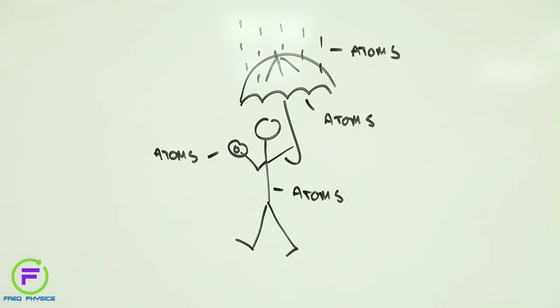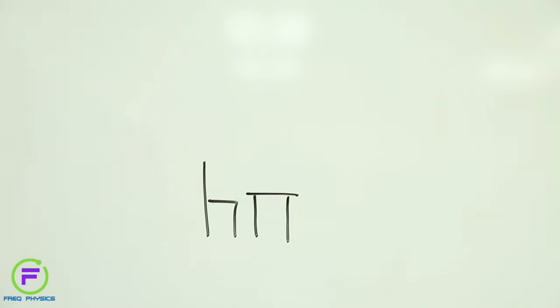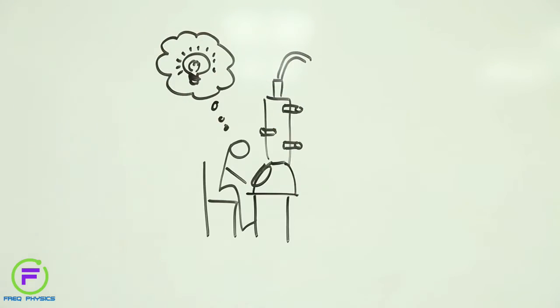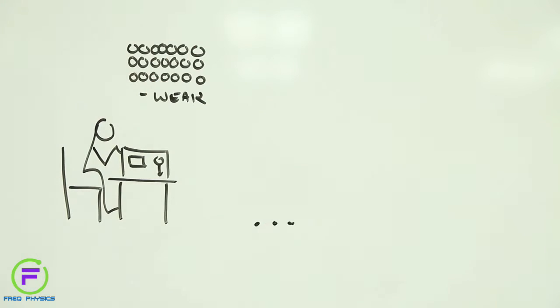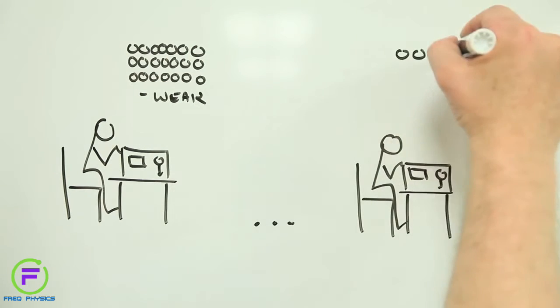Researchers quickly developed instruments that allowed them to see how these atoms come together to create materials. These instruments enabled them to start working out how what a material does depends not only on which atoms it's made of but how they are arranged together. Then they discovered how to create new materials by putting atoms together in different ways and the world changed.